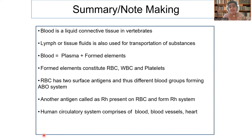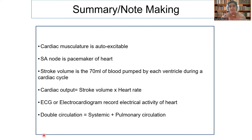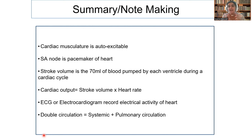The human circulatory system contains blood, blood vessels, and heart. The cardiac musculature is auto-excitable — the muscle of the heart excites by itself — because the SA node is the pacemaker of the heart. It initiates contraction depending upon the action potential generated in the SA node, depending upon the blood pressure outside and inside. The stroke volume is about 70 ml of blood pumped by each ventricle during the cardiac cycle.